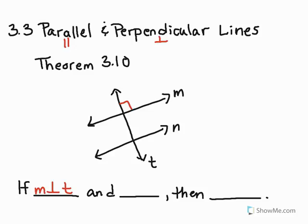So the first part of this is if I have a line M, and it is perpendicular to line T, and line N happens to be perpendicular to line T as well, so N is perpendicular to T, then guess what we can say about lines M and N. Take a guess.